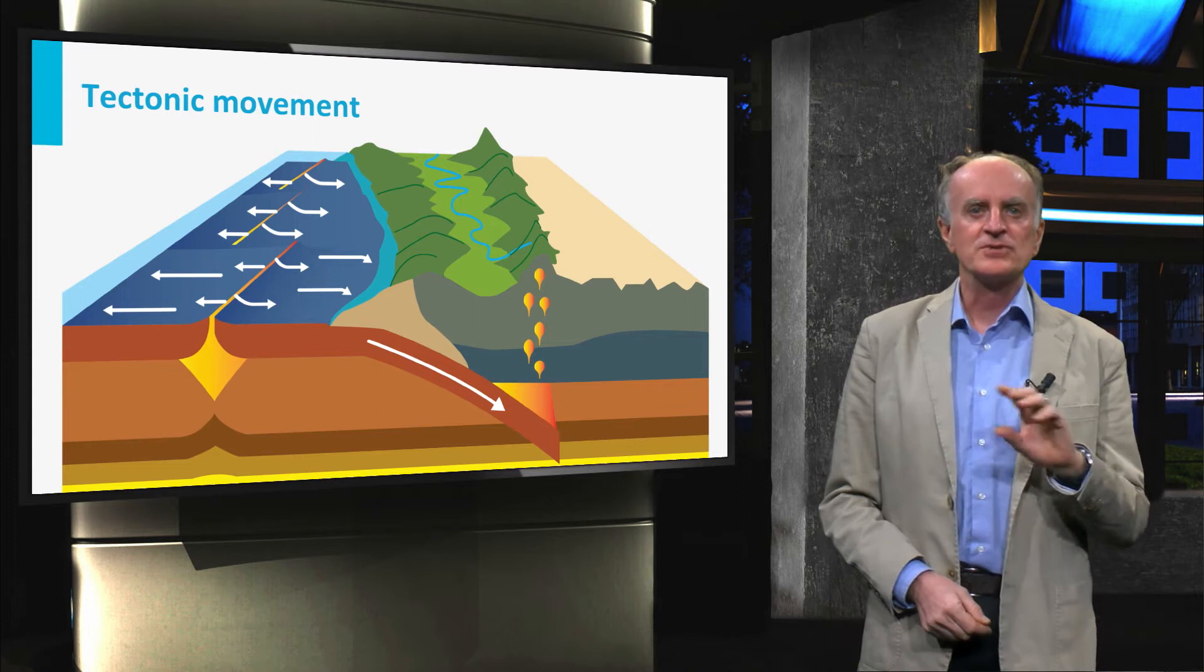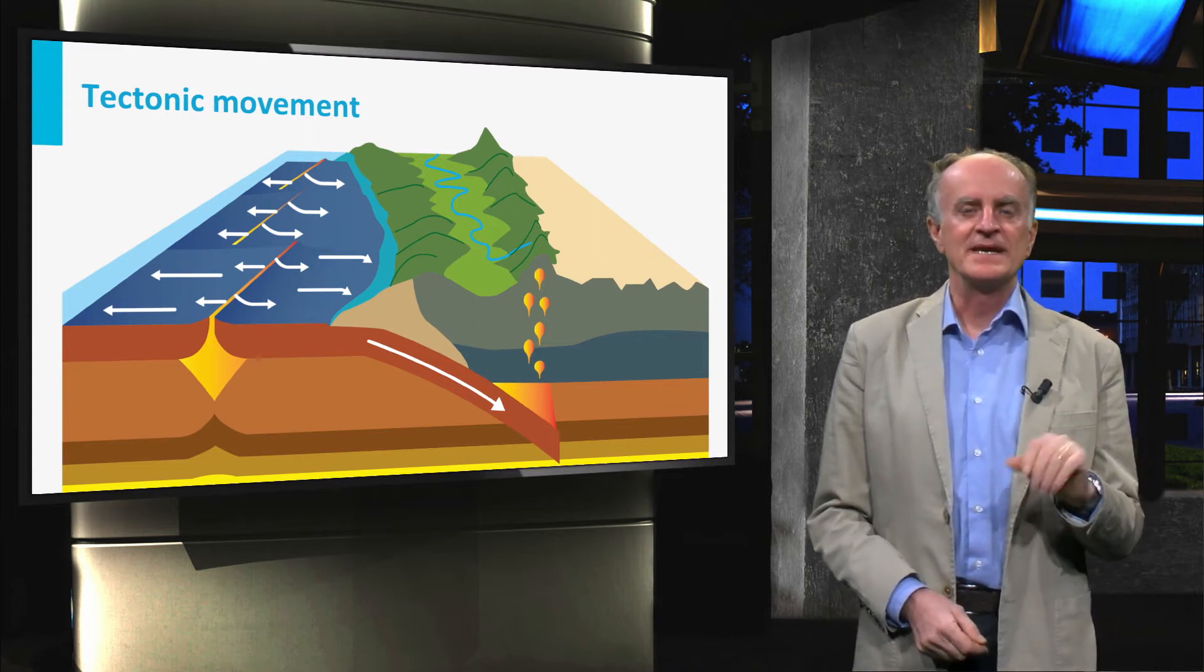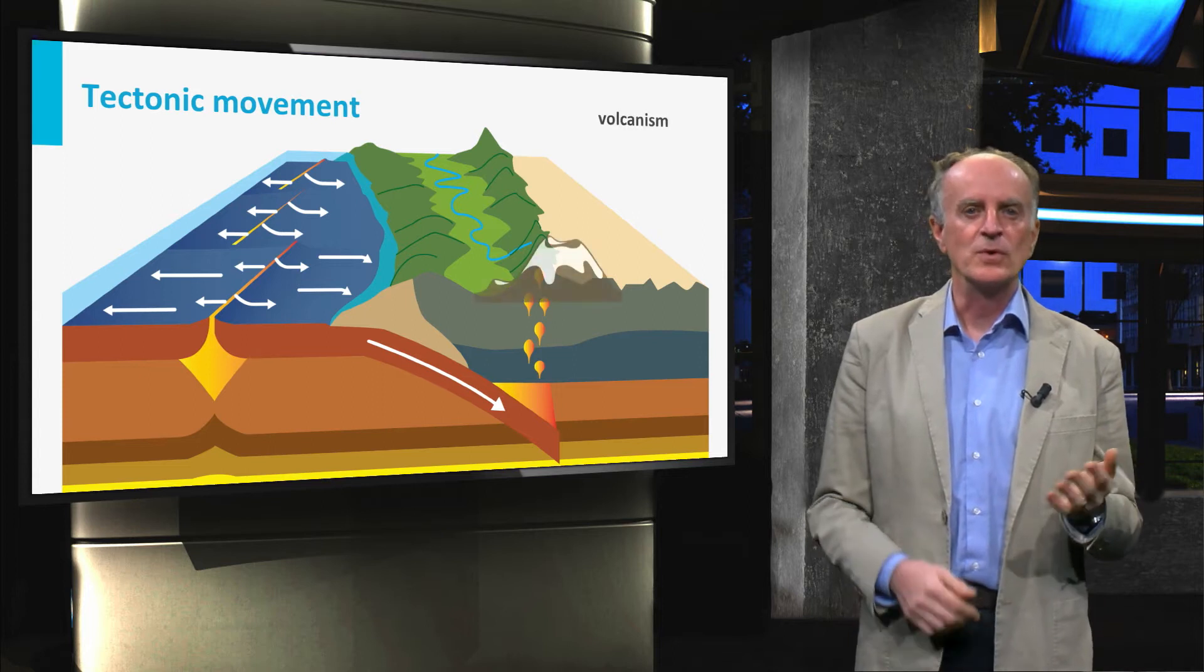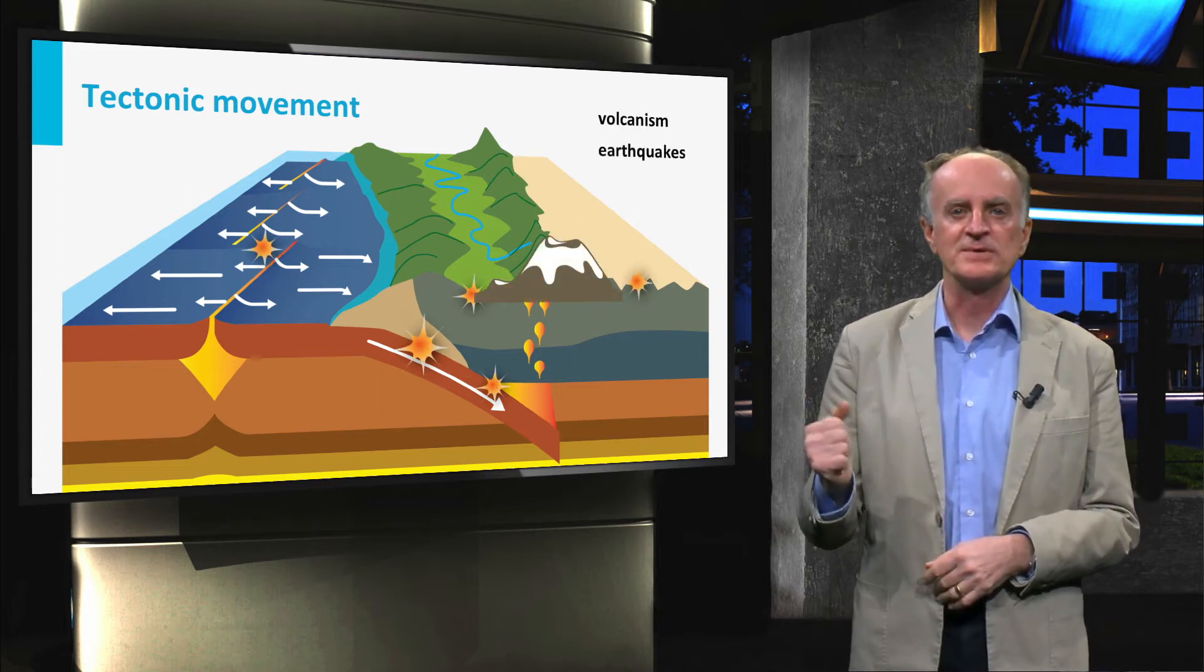There are three major types of phenomena taking place at active continental margins: volcanism, earthquakes, and crustal accretion.